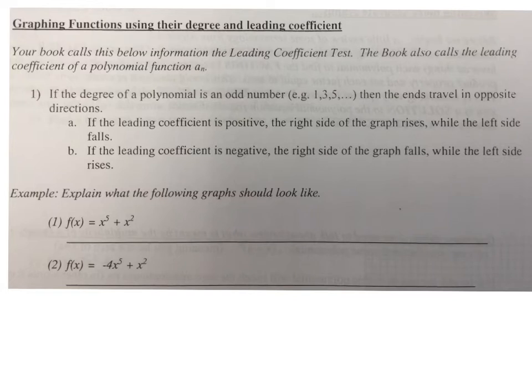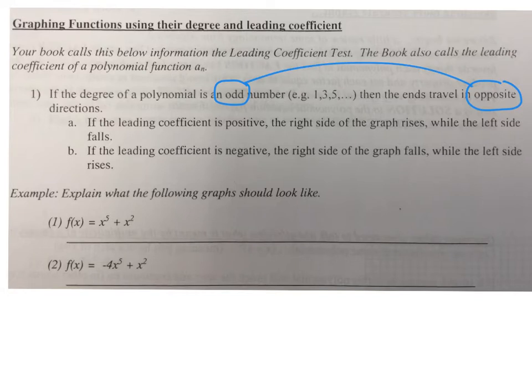Number one says: if the degree of the polynomial is odd — meaning the highest power is odd: 1, 3, 5, 7, 9, etc. — then the ends travel in opposite directions. The way to remember this is that if the degree is odd, then the ends are opposite. Odd and opposite go together.